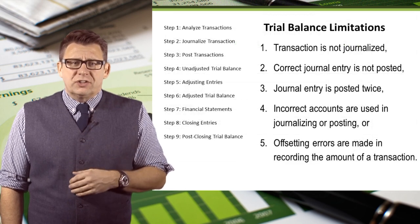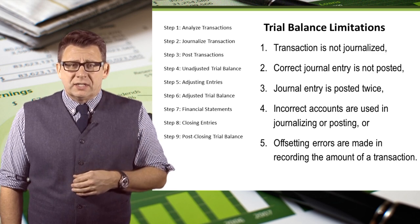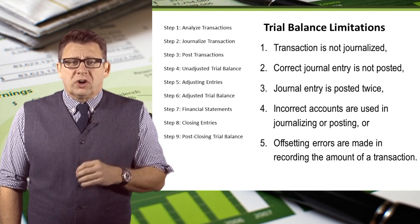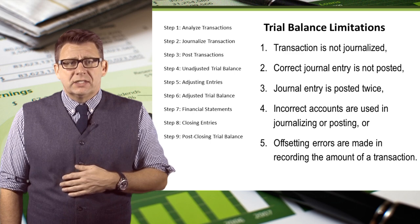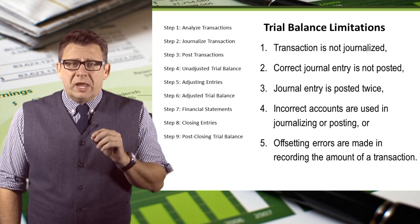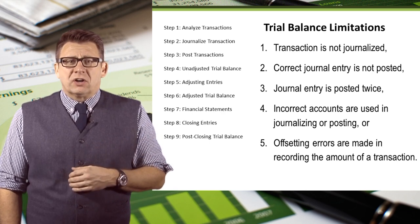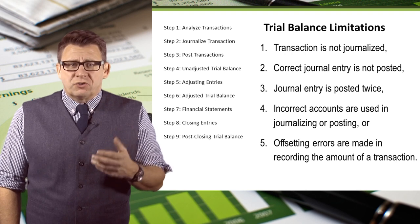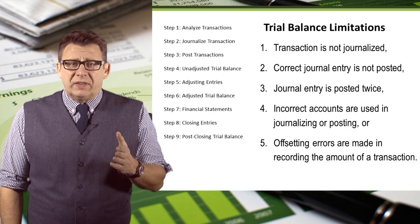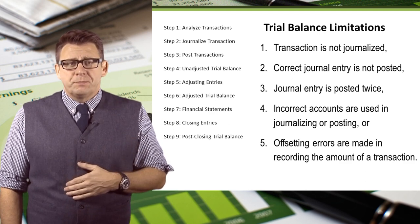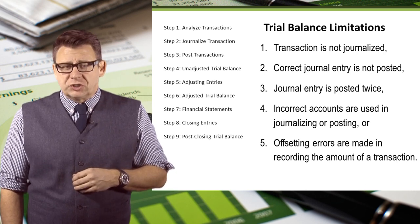So there are limitations to the unadjusted trial balance, including: some transactions may not have been journalized; the correct journal entry might not have been posted; a journal entry may have been entered or posted twice; incorrect accounts may have been used in the journalizing or posting of transactions; or offsetting errors are made in the recording of transactions. This is why we need to perform the next step in the accounting cycle — adjusting journal entries — so we can adjust the account balances to more accurately reflect the financial position of a company.